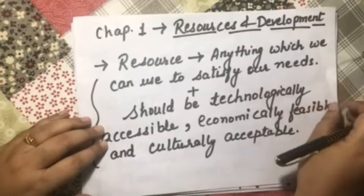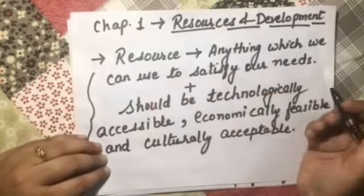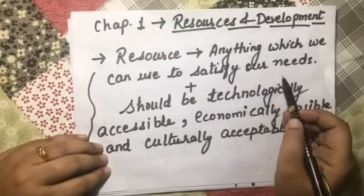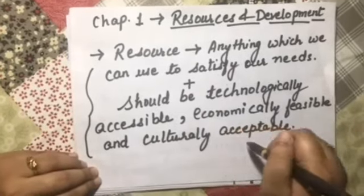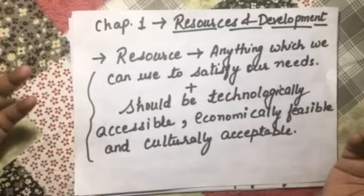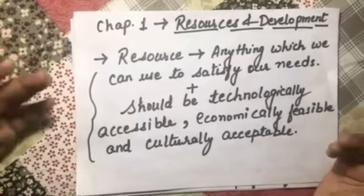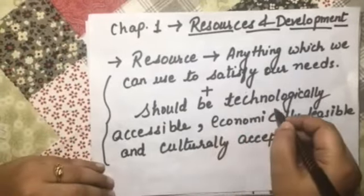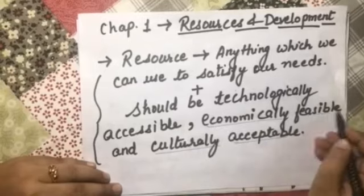Let's begin with the first chapter in geography — Resources and Development. What is a resource? Anything which we can use to satisfy our needs. It can be anything: animals, human beings, plants, living things, non-living things. But the condition is that it should be technologically accessible, economically feasible, and culturally acceptable. This is called a resource.